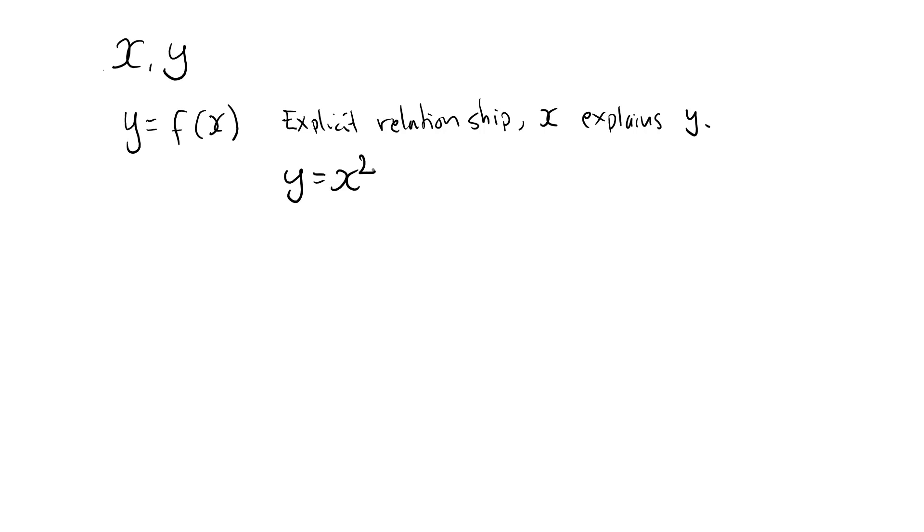For example, we can also have an explicit relationship in the reverse. So I could have x as a function of y instead, it will still be called an explicit relationship. But in this case, it is an explicit relationship in x. If I know the value of y in this case,